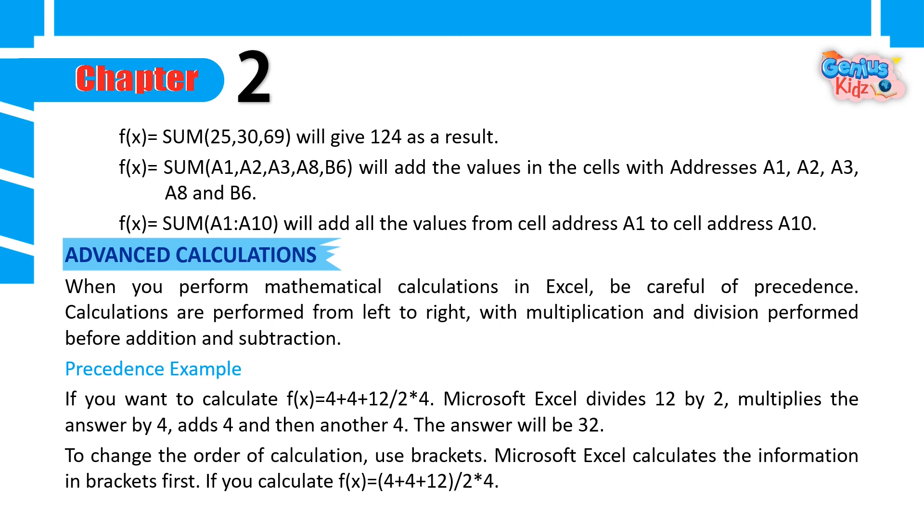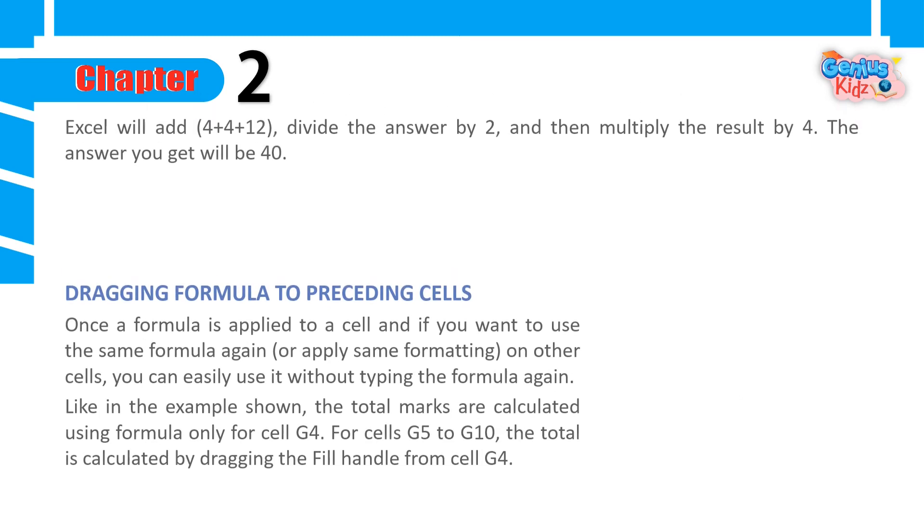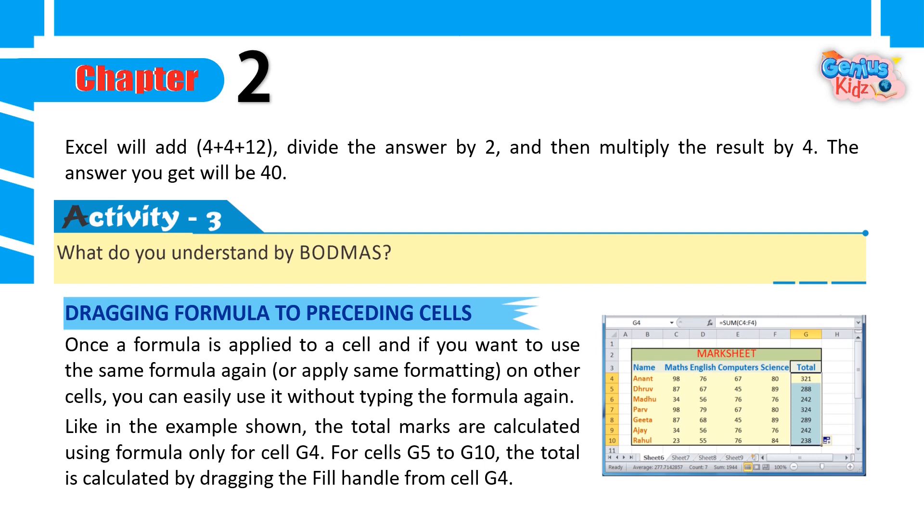If you calculate equals open bracket 4 plus 4 plus 12 close bracket divided by 2 multiply 4, Excel will add 4 plus 4 plus 12, divide the answer by 2, and then multiply the result by 4. The answer you get will be 40. Activity 3: What do you understand by BODMAS?